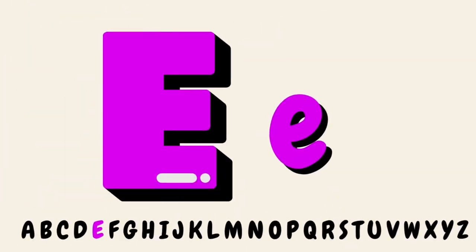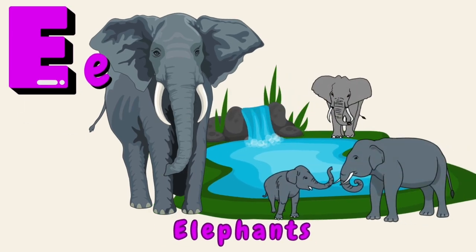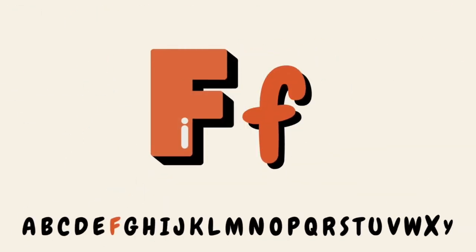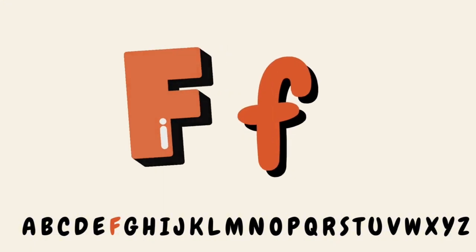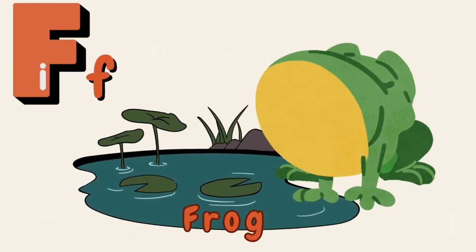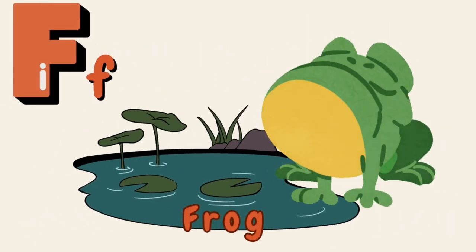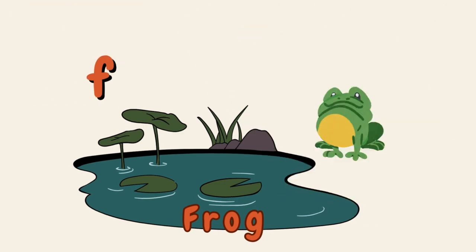E, E, E. Elephant. E is for Elephant. F, F, F. F, Frog. F is for Frog. Ribbit, ribbit.